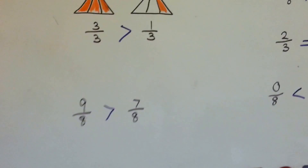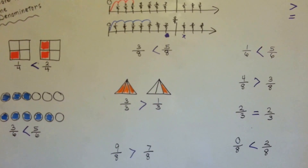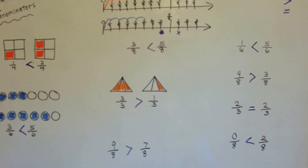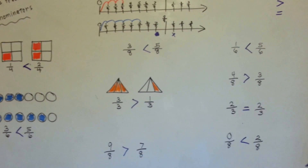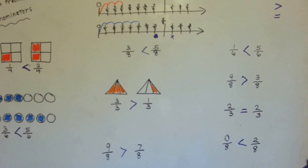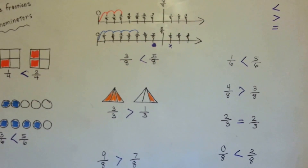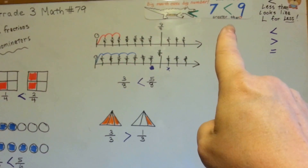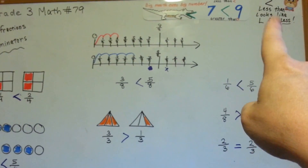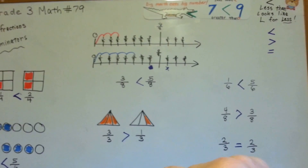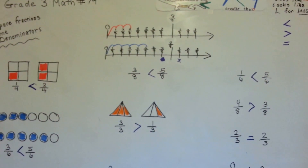So when you compare fractions and the denominators are the same, you can just go by the numerator number on top to see which one's bigger. And remember, big mouth eats big number, and the symbol that looks like an L is the one that is the less-than symbol.